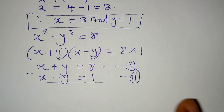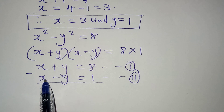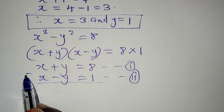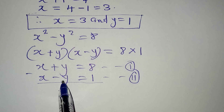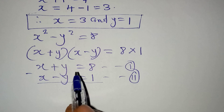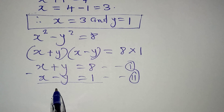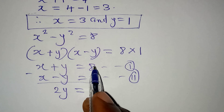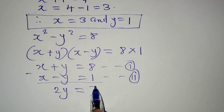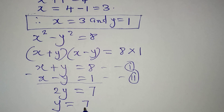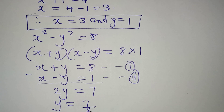Let's eliminate using the elimination method so that x minus x is gone. Then y minus minus y gives us two y, which equals eight minus one, and that's seven. So y equals seven divided by two.